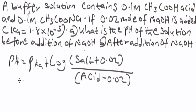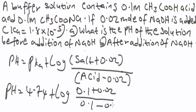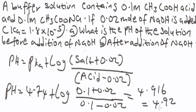Substituting values: pH = 4.74 + log((0.1 + 0.02) / (0.1 − 0.02)) = 4.74 + log(0.12 / 0.08). Calculating this with a calculator gives approximately 4.92 (to two decimal places). So this will be the pH after the addition of sodium hydroxide.